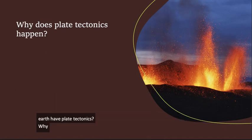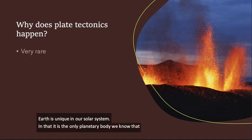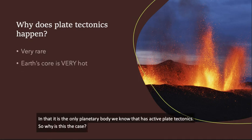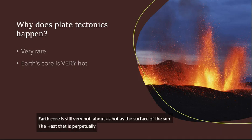When does plate tectonics happen? Earth is unique in our solar system in that it is the only planetary body we know of that has active plate tectonics. So why is this the case? Well, Earth's core is still very hot, about as hot as the surface of the sun.